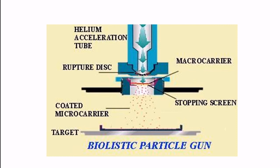It stops the tungsten or gold-coated particles. Only the DNA can pass through the stopping screen and enter the specific target by rupturing the cell wall.